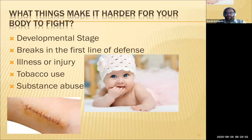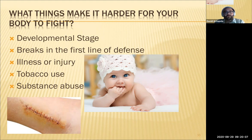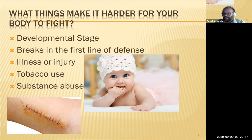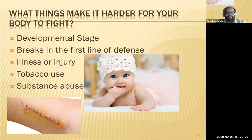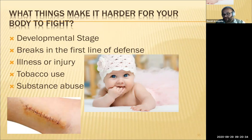Things that make it harder for your body to fight infection: developmental stage — if you're younger, your immune system is immature and it's harder to fight off infections. We want active immunity where our immune system activates to protect us from exposure. Any breaks in the first line of defense, like a cut or burn bypassing the skin, make it harder to fight off infections. If you've already been sick, it decreases your immunity. Tobacco use is significant.